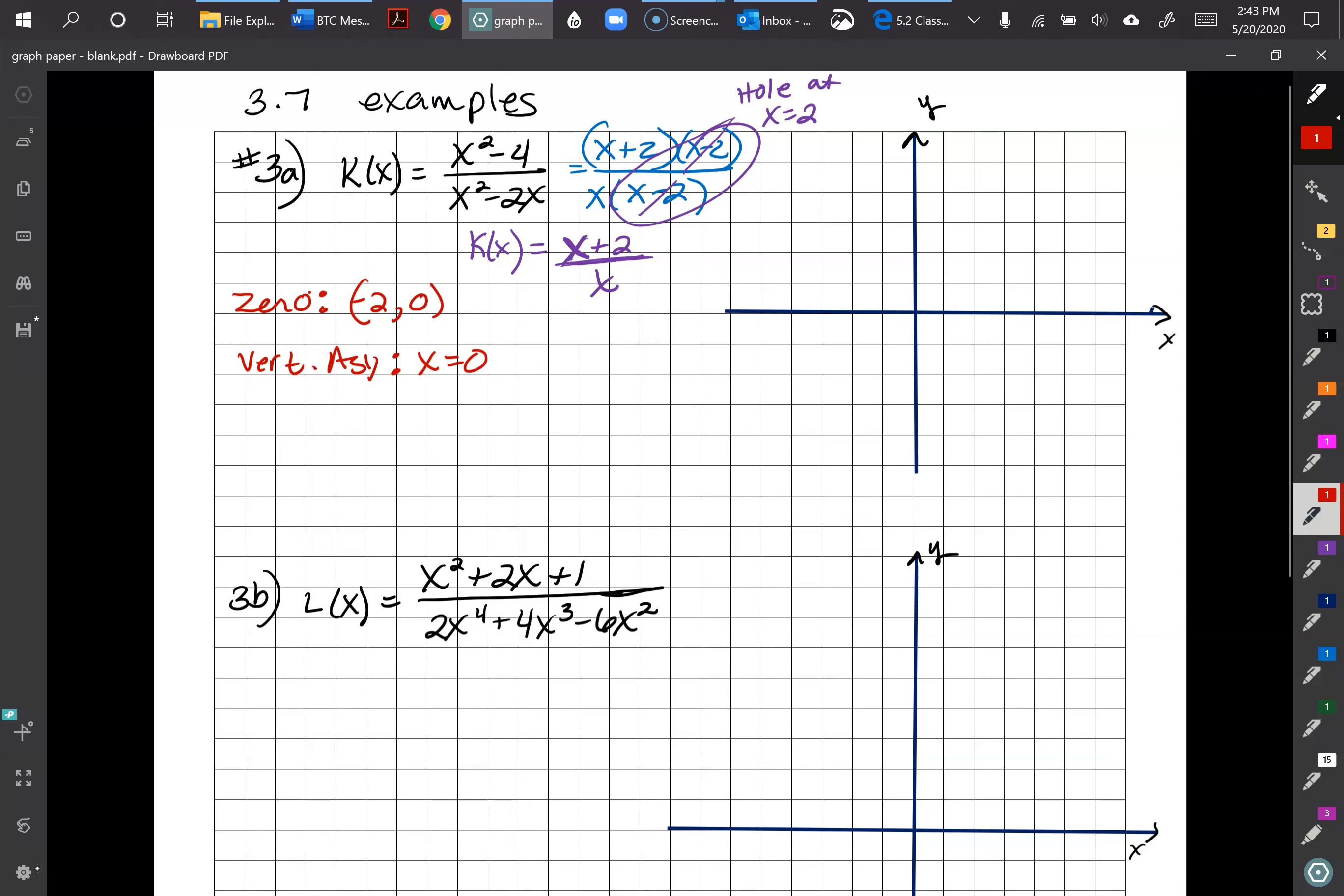Then we're going to look at the hole at the point 2. And then we have to figure this out, right? So we're going to plug into the simplified version. Because if we put it back in here, if we plug the 2 in here, we're always going to get an undefined. We'll get our zero over zero, right? So we don't want to have that. So we need to plug into our simplified version here.